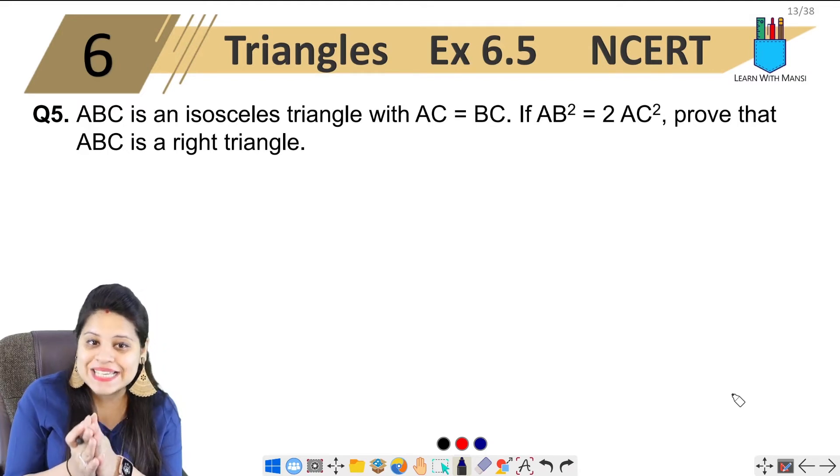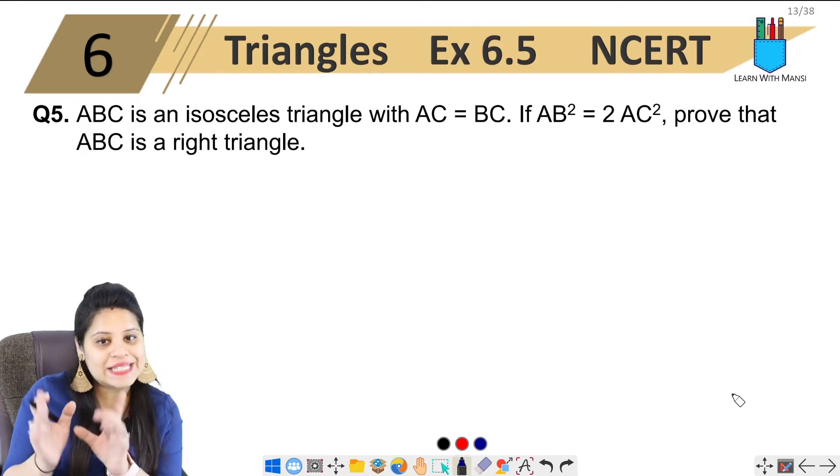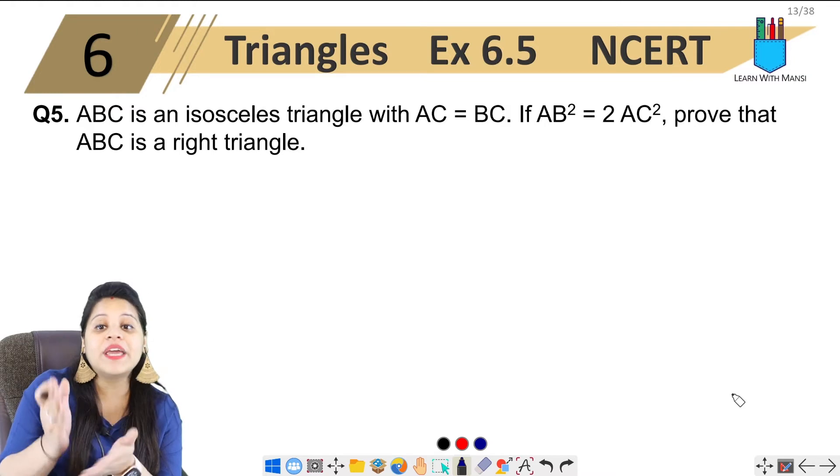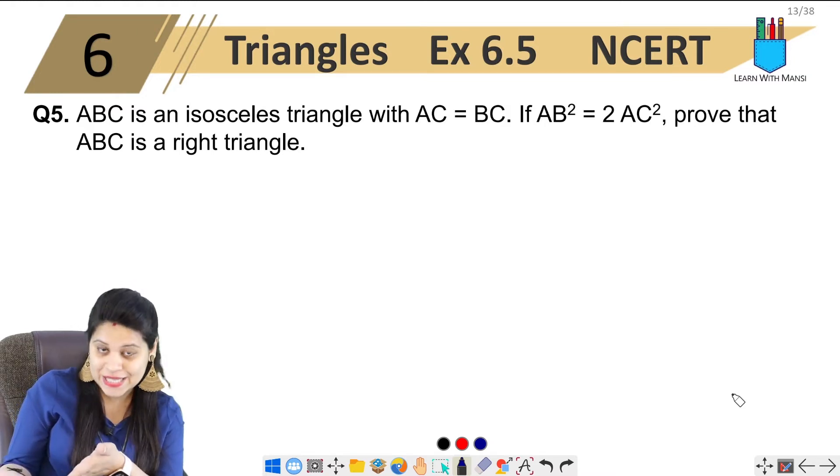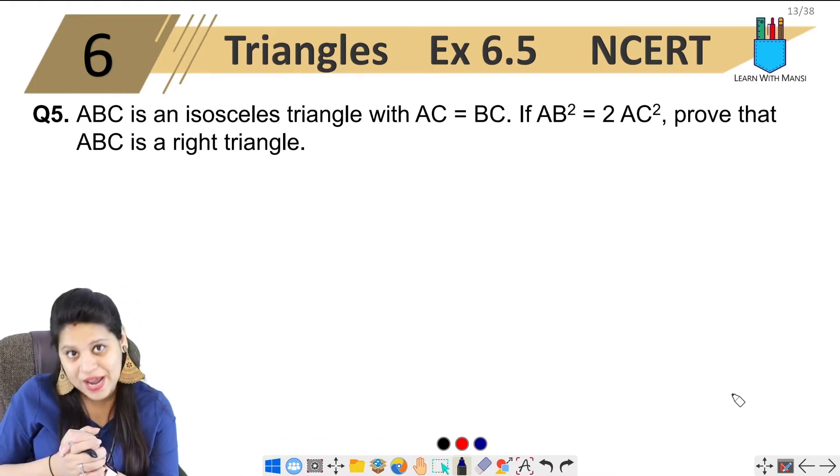Here we have given ABC is an isosceles triangle with AC equals to BC. If AB square equals to 2 AC square, prove that ABC is a right triangle.